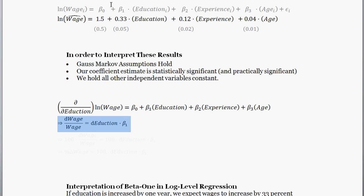Taking the differential with respect to education, we get d wage over wage is equal to the change in education times beta one. And then kind of rearranging stuff, we get the following. So d wage there is the change in wage, and the d education is the change in education.